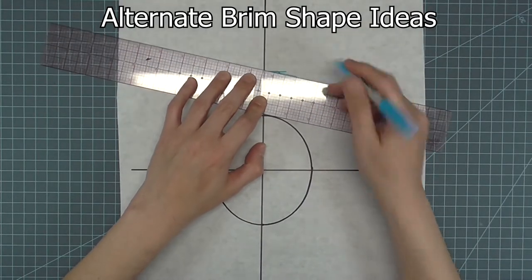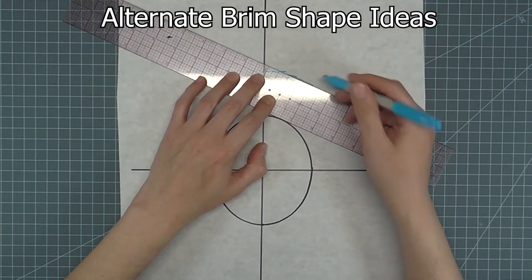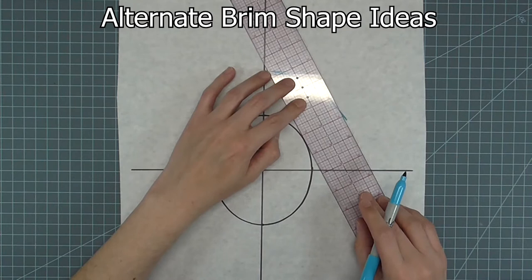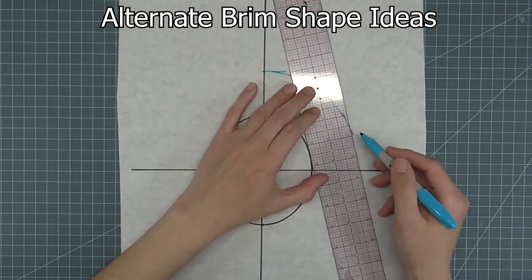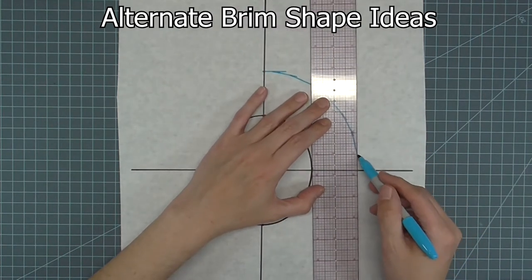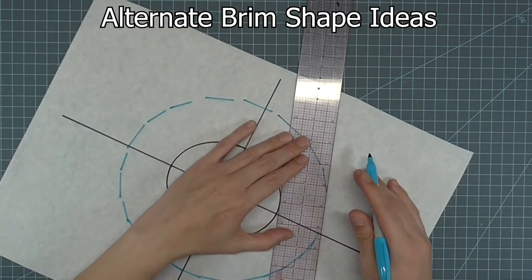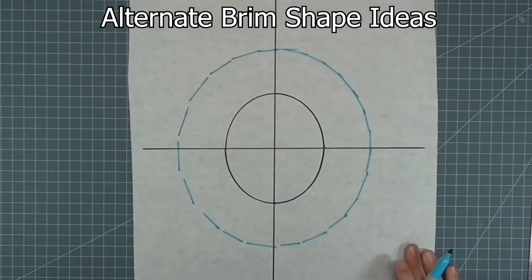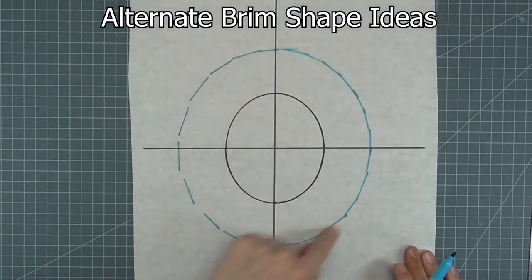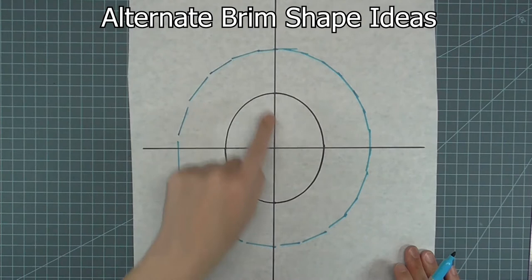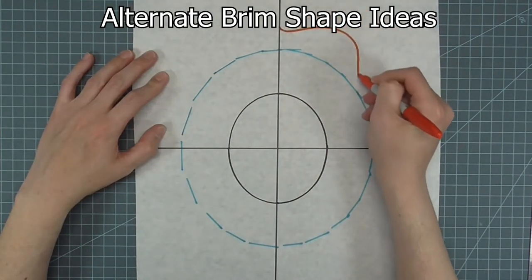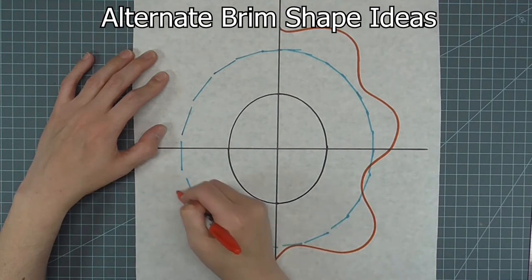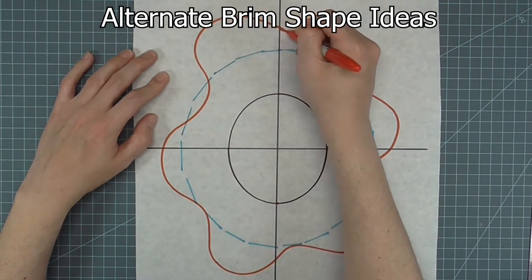For some alternate designs, if you want a consistent oval, follow the curve of the head size shape. If you want an irregular shape, just draw the shape you want outside of the head size line. It doesn't have to be consistent, and it can be asymmetrical.